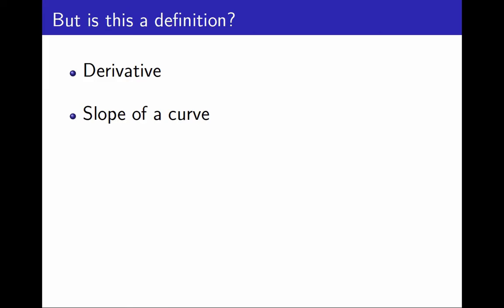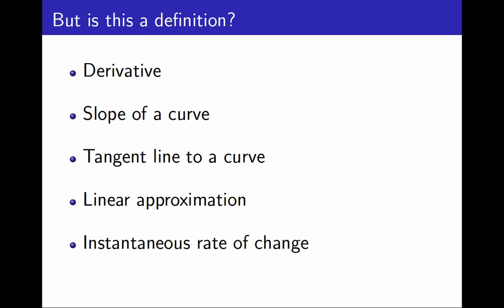And that's why I try to define derivative as a slope of the tangent line instead. But then, how do I define tangent line? One way to define tangent line is using linear approximations or instantaneous rate of change. But how do I define those concepts? The best way to define them is probably using derivatives, and then we are back where we started.